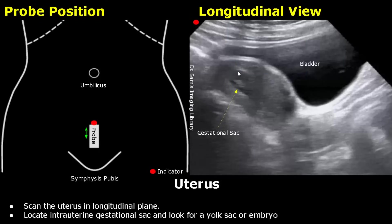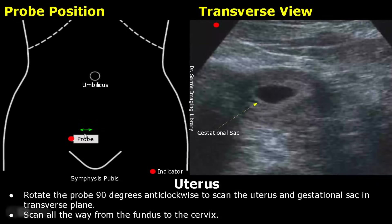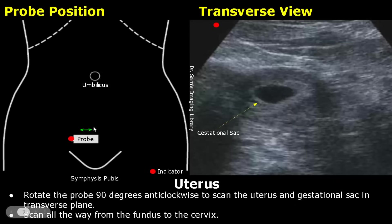This is in early pregnancy. You can see a gestational sac here containing an embryo. You can measure the CRL after locating it. It is seen within the uterine cavity, so it is an intrauterine pregnancy. Rotate the probe 90 degrees anti-clockwise to scan in transverse plane. This is the uterus containing a gestational sac in transverse view.